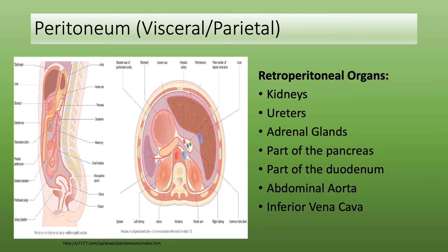Most of the abdominal organs are covered with a double-layered membrane called the peritoneum. Some organs — such as the kidneys, adrenal glands, most of the pancreas except the tail, the ascending and descending large intestine, and ureters — are found behind the peritoneum. That is why we call these organs retroperitoneal organs.